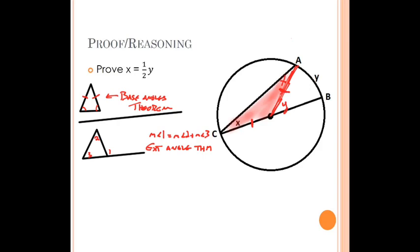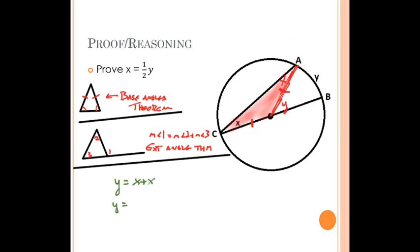Now applying the exterior angle theorem to our diagram: Y is the exterior angle, and it equals the sum of the two remote interior angles, X and X. So Y equals 2X. Solving for X by dividing both sides by two gives us X equals Y over two, or half Y. That's our lazy proof for the inscribed angle theorem.